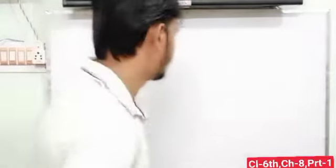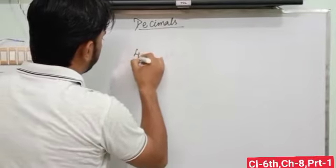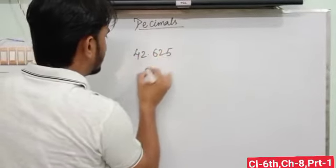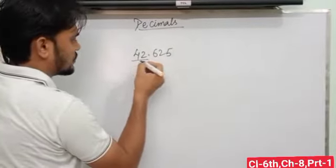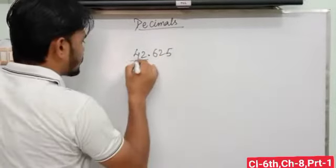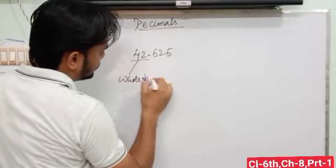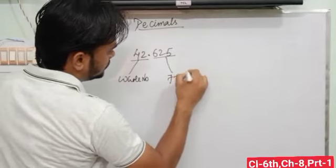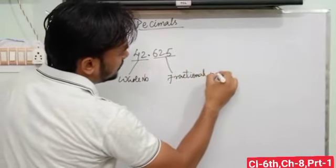Then see here, if I have a number 32.625, these two digits are situated before the decimal. So this is the whole number, and these two digits are the fractional part.